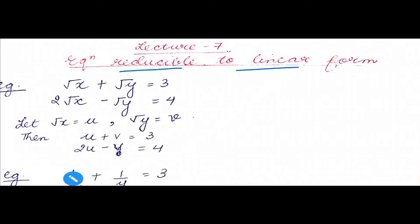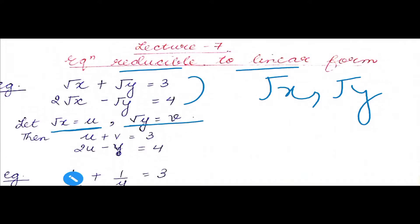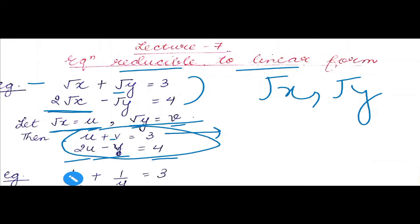We have two variables in both equations: one is root x and the other is root y. So what we do is: let root x equal u, and root y equal v. The first equation then transforms to u plus v equals 3, and the second equation becomes 2u minus v equals 4. Now we have a pair of linear equations in two variables — we can definitely solve it using any method.